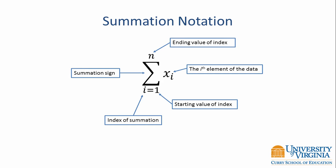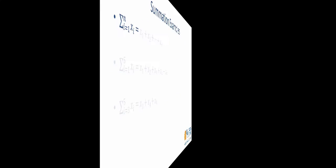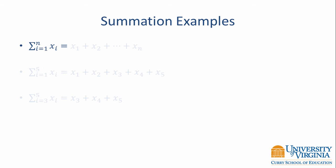Let's look at an example of how to expand the summation notation. Here we have the sum of x sub i from i equals 1 to n. The starting value of the index is 1, therefore we start with x sub 1. Then we increment the index by 1 to get x sub 2, giving us x sub 1 plus x sub 2. We continue in this fashion until we get to the ending value of the index, which in this case is n, and the last value we're adding is x sub n.